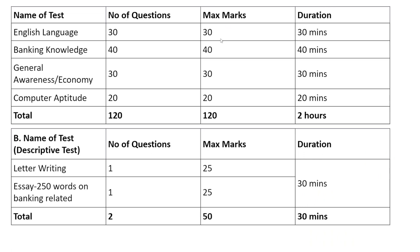In the exam there is English language, banking knowledge, general awareness, economy and computer aptitude. 40 marks are allotted to the banking knowledge section — 40 marks directly. That's what we are going to discuss today: these 40 marks, banking knowledge.